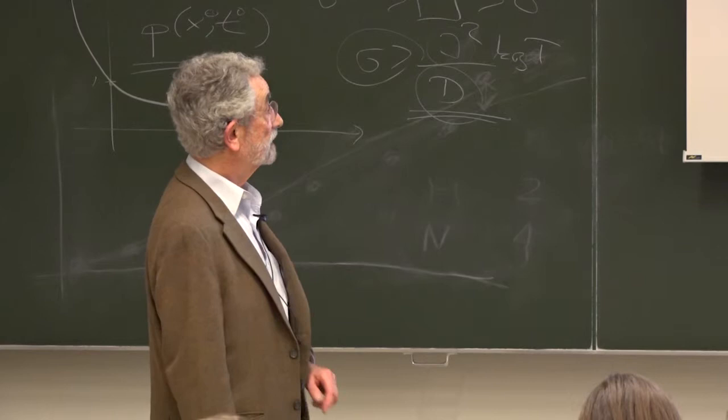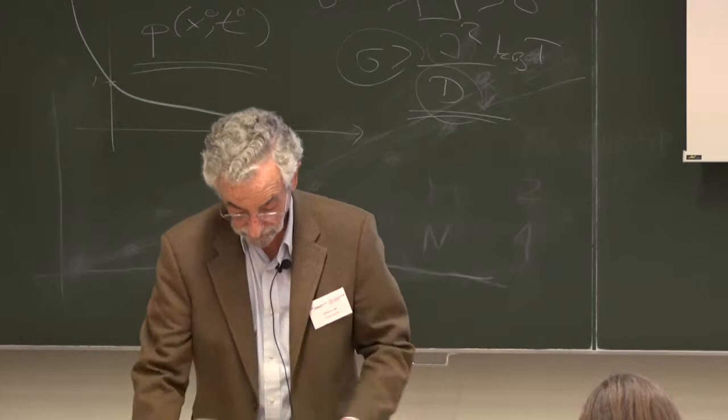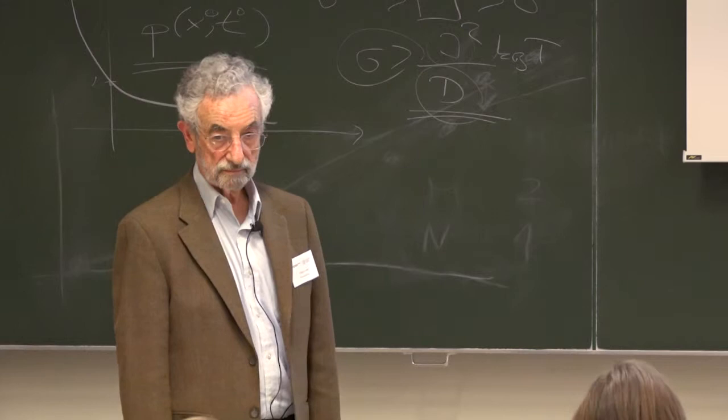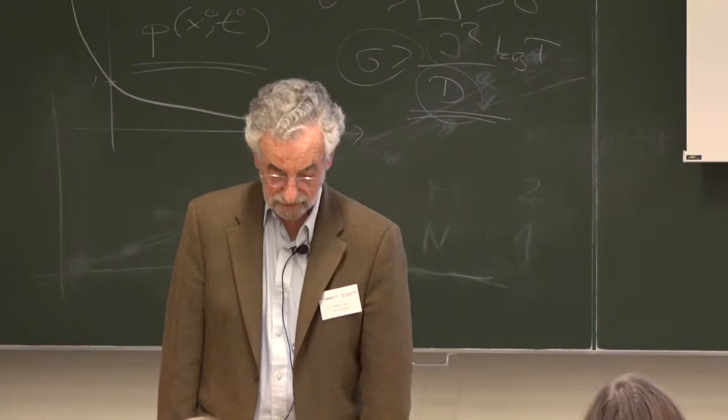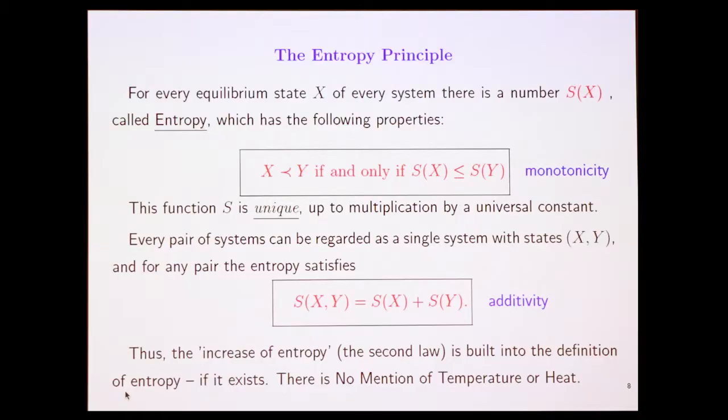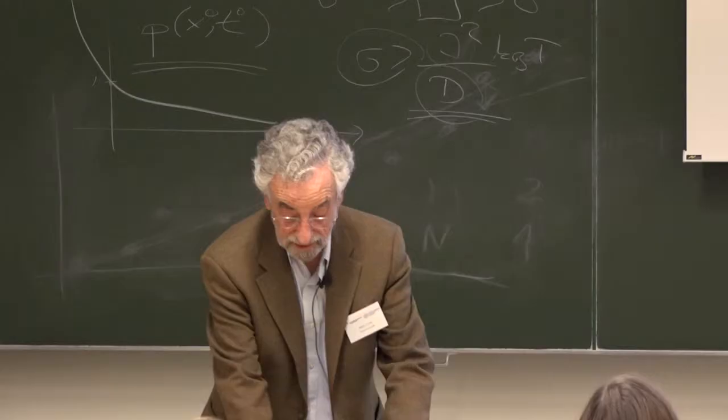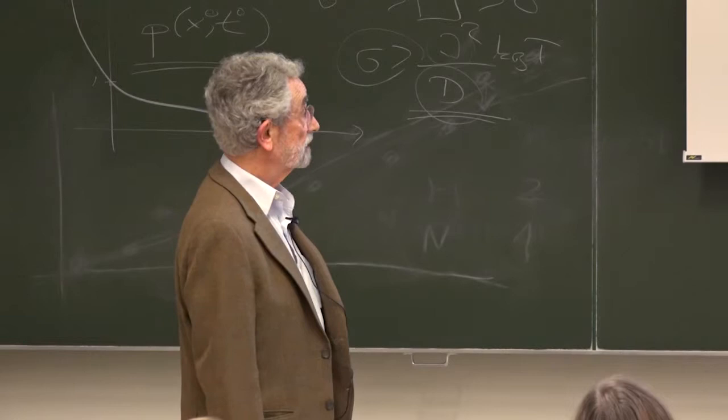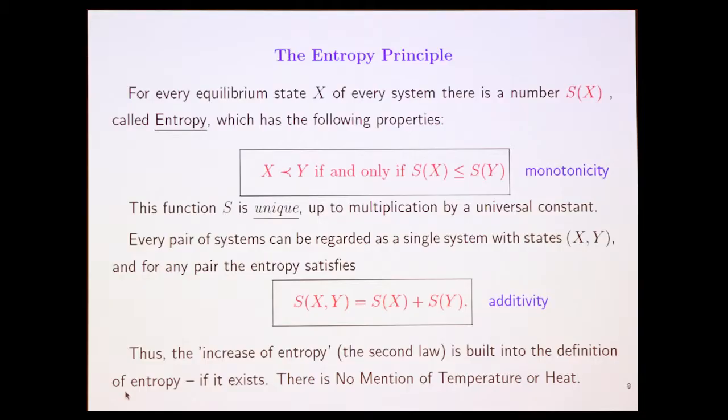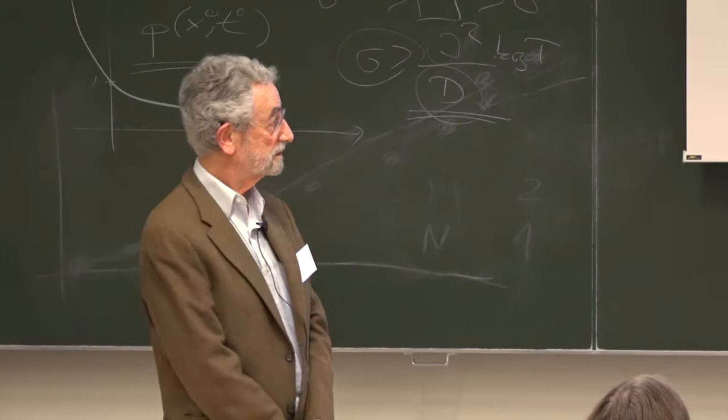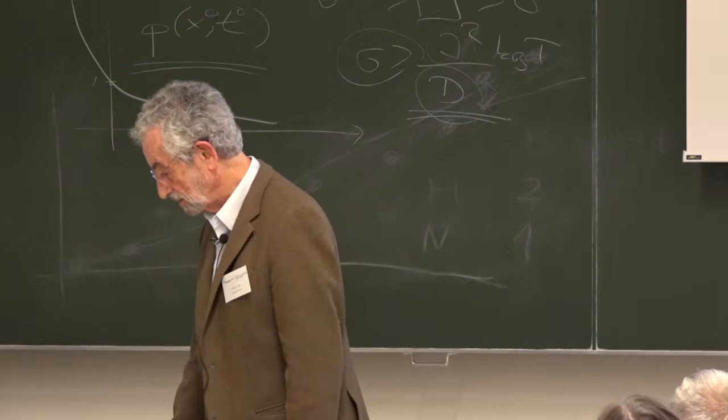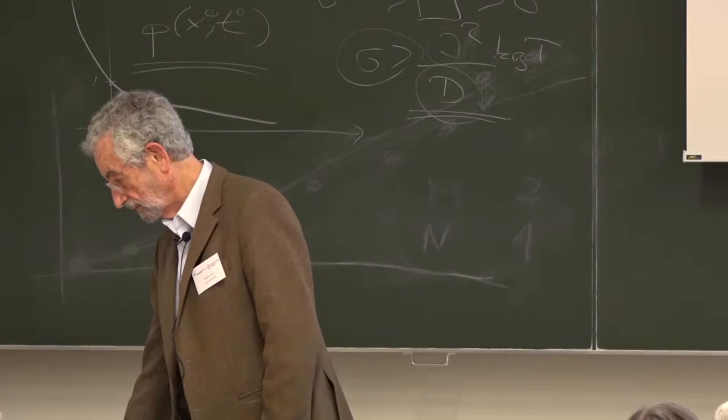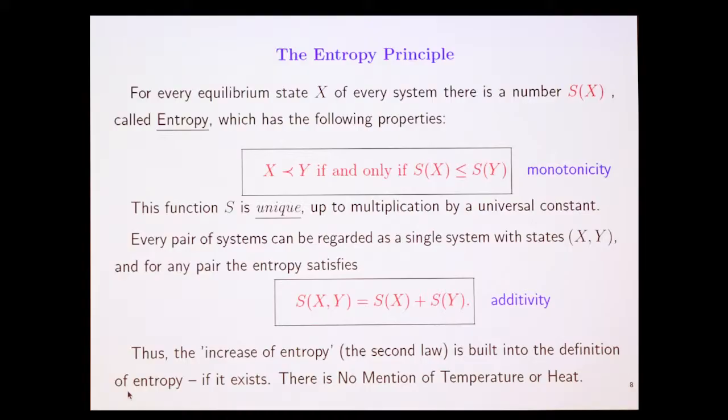That's what we would like to achieve. Up to a multiplication by a universal constant, of course. So we would like our entropy to do that. Second thing we would like to do is the following. If I take two systems and regard them as one system, but maybe connect them a little bit, then take them apart, whatever. If I take two systems, one in state x and the other in state y, I can think of this as a system. Why not? It's an equilibrium. I would like the entropy of this combined system to be the sum of the entropies. That's additivity. Thus, the increase of entropy, that is the second law, that's the first thing, is built into the definition of entropy.